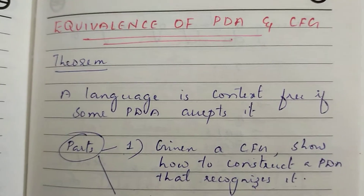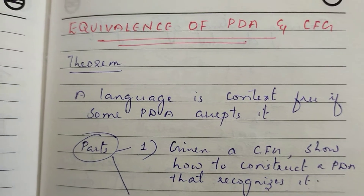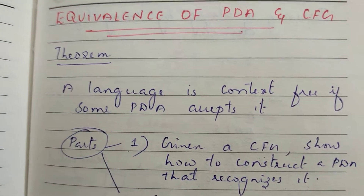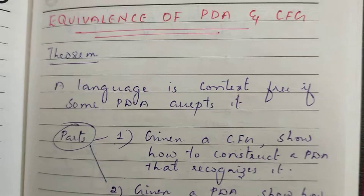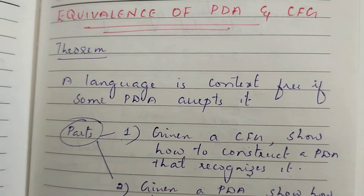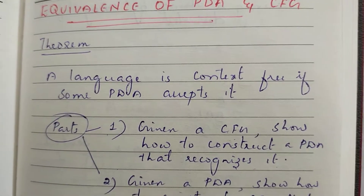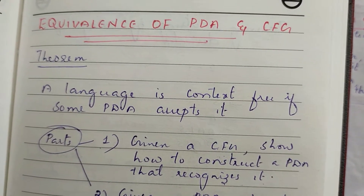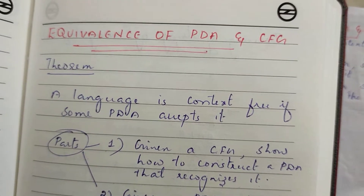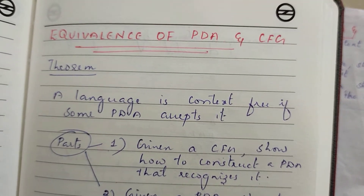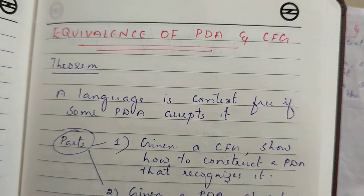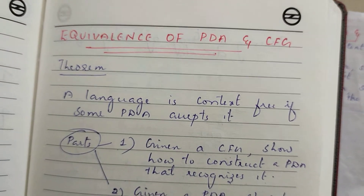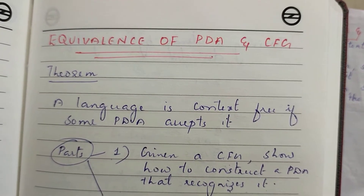In the first video, we have seen a context-free grammar. It will create a corresponding grammar. Let's look at the grammar example. We have sentential form. Let's look at the leftmost derivation. This is a sentential form. Let's look at the non-terminal and terminal.